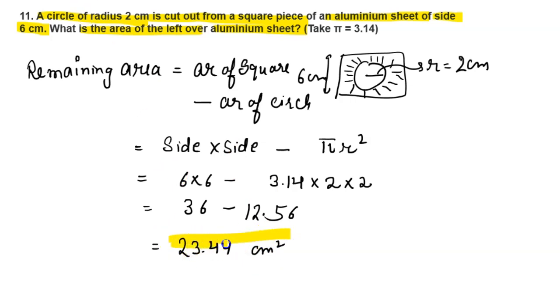Remaining area left when circle is removed from the aluminium sheet will be 23.44 centimeter squared. Thank you.